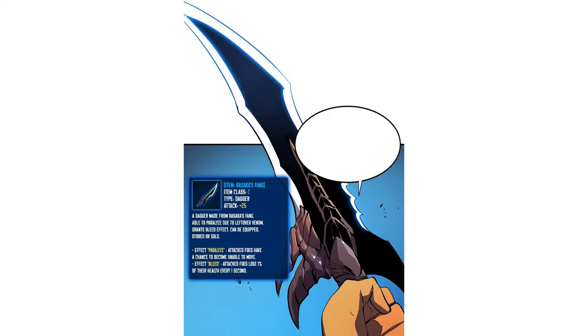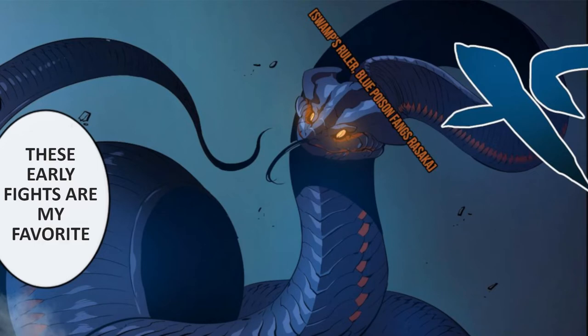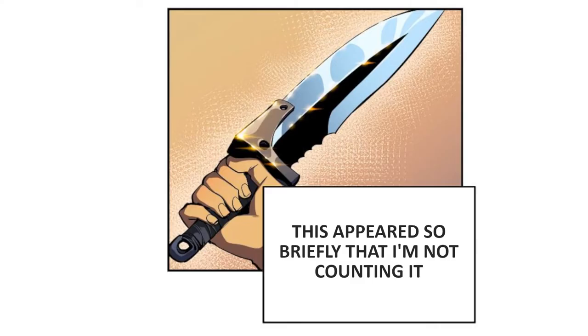This dagger is Rikasa's Fang, or Kasaka's Fang depending on the spelling. It's the dagger that Jinwoo receives after beating the giant snake at the end of the subway dungeon. It's the first dagger we see him using, not counting the crappy one he talks about in a flashback, so it's the first one I'm making as part of this challenge.